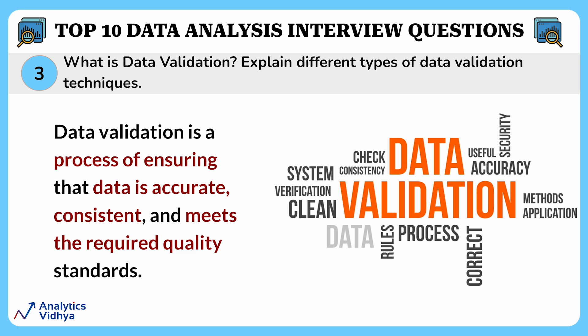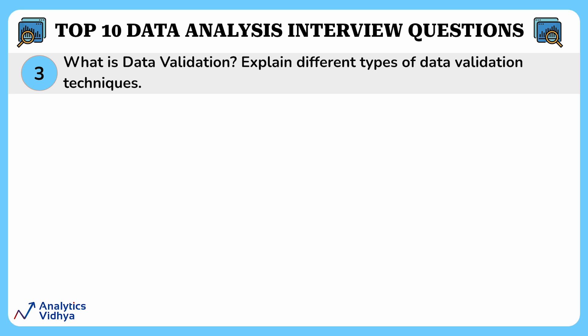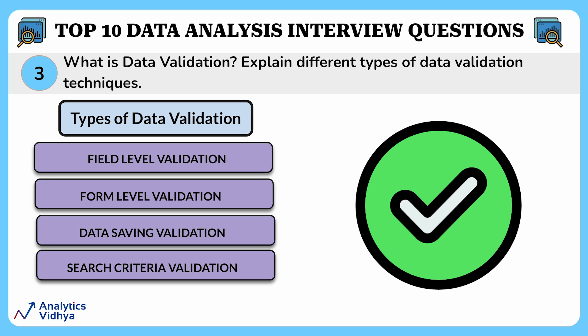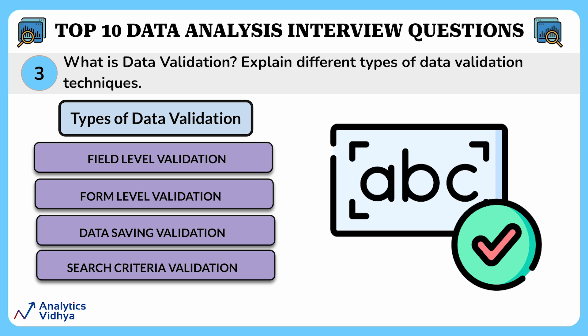Data validation is a process of ensuring that data is accurate, consistent, and meets the required quality standards. In simple words, it's like a set of checks and tests that data goes through to verify its reliability and integrity. One type of data validation is field level validation, which is done across each of the fields to ensure there are no errors in the data entered by the user — think of this like a spell checker for individual words.